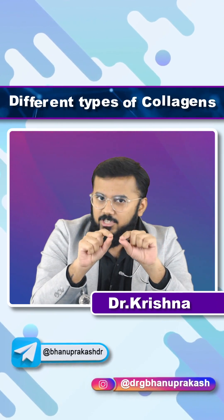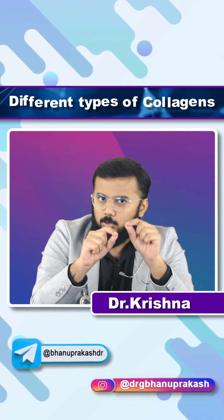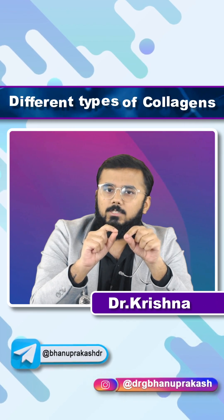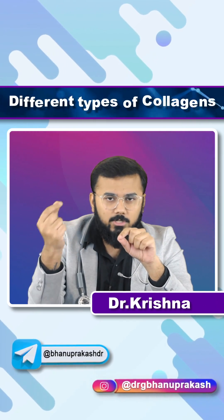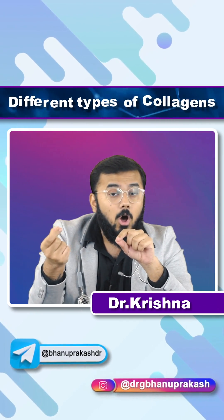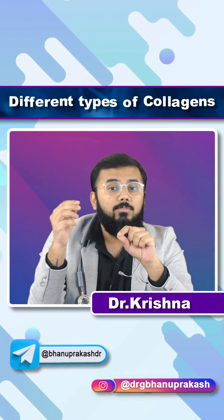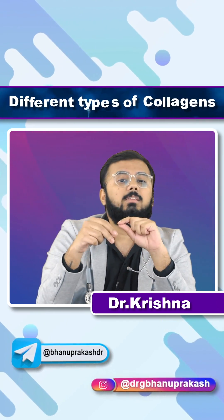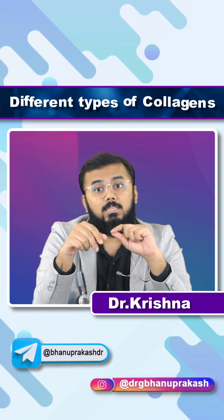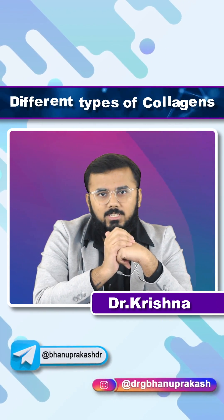For example, if there is a deficiency or any defect to type 4 collagen, that would result in Alport syndrome. The second important condition is that if your antibodies are attacking type 4 collagen, that would result in Goodpasture syndrome.